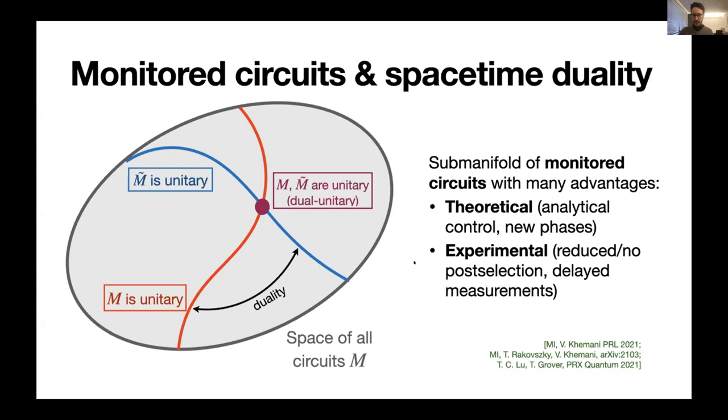What this does for us is it gives us many advantages both on the theory front and on the experimental or practical front. So theoretically, we can use knowledge, techniques, and ideas from unitary dynamics and use them to gain analytical control on some of these evolutions that are monitored. And also we can guide us to discover different kinds of entanglement phases that go beyond the area, volume, and logarithmic scaling that we knew about. And then on the experimental front, this issue with post-selection of measurement outcomes gets hugely improved. So there's an exponential improvement there. And also what measurements you have left only happen at the end of time, which is advantageous for present-day quantum simulators, where measurements are very slow and it's kind of annoying to do them in the middle of the dynamics. It's more convenient to do them at the end. So multiple advantages for experimental realizations of at least these monitored circuits in this particular sub-manifold.